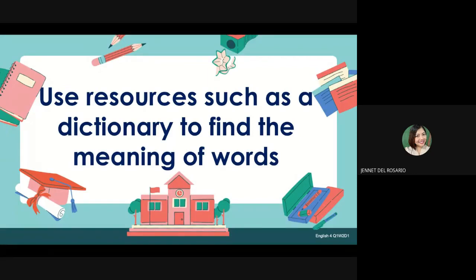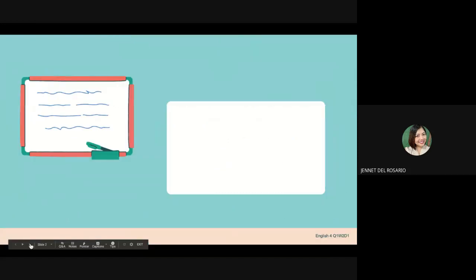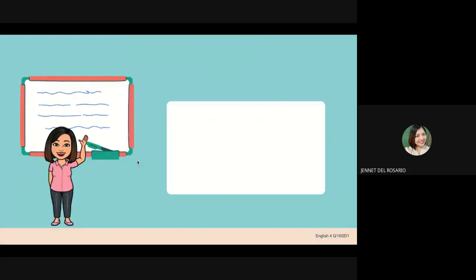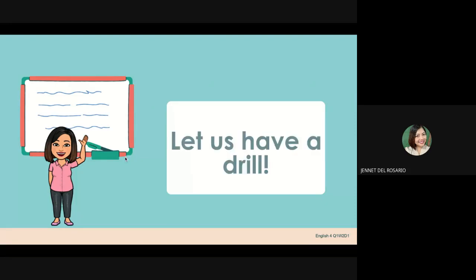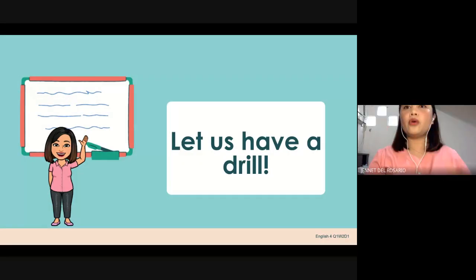This lesson is about the use of resources such as a dictionary to find the meaning of words. Let's see what it's all about. Let us have a drill first. Can you see the screen, kids? Give me a thumbs up if you can see the screen. Okay, very good, you can see the screen.